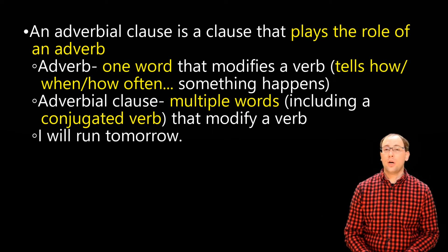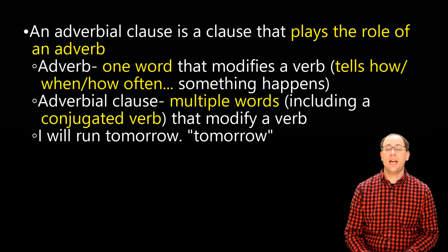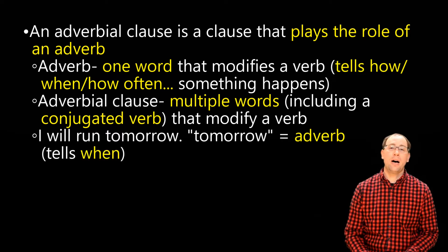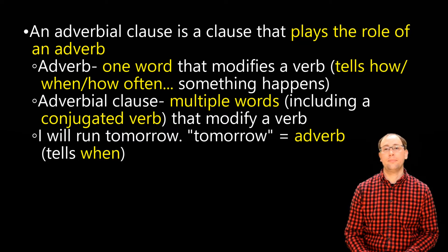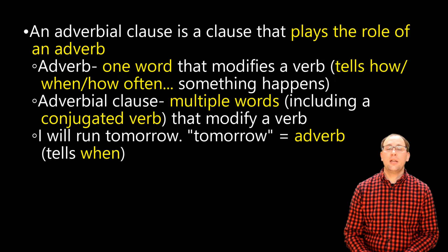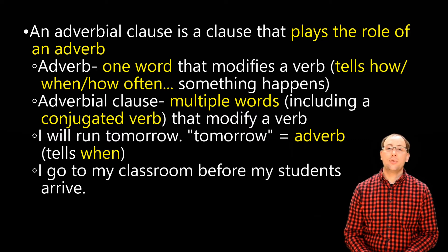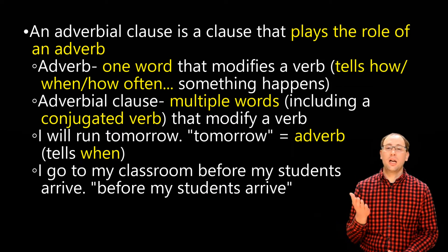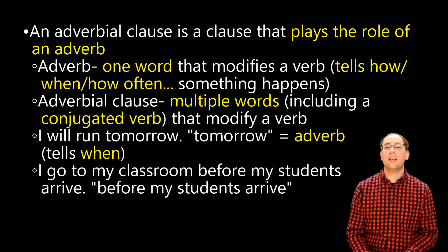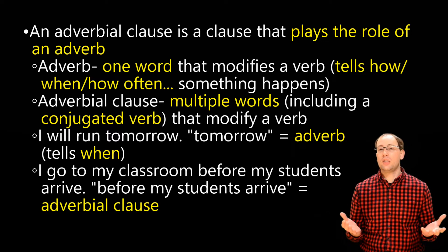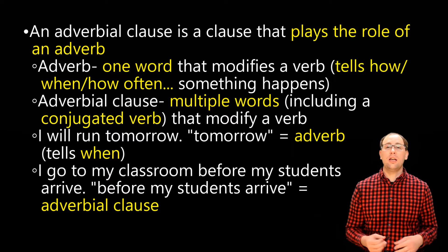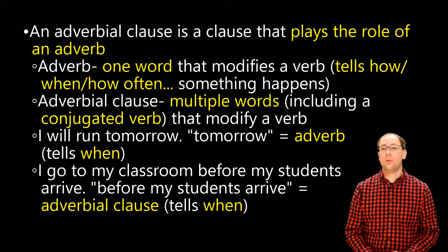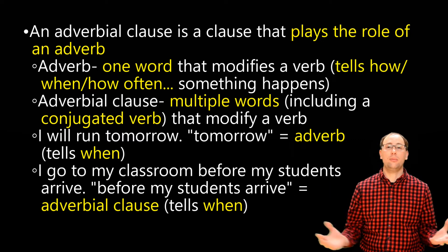In the sentence 'I will run tomorrow,' the word 'tomorrow' is an adverb because it tells when I will do the action of running — it modifies the action of 'run' by telling when, and it's one word. In the sentence 'I go to my classroom before my students arrive,' the whole phrase 'before my students arrive,' which includes the conjugated verb 'arrive,' is an adverbial clause. It modifies the action — it tells when I go to my classroom. When do I go? Before my students arrive.